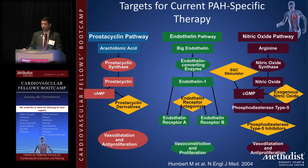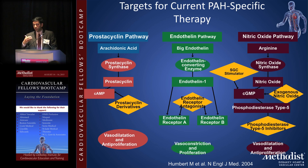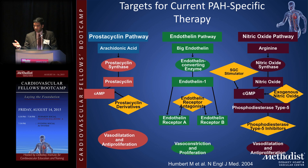There are three approved treatment pathways. The first is the prostacyclin pathway, which has the most evidence for survival benefit. We started with IV therapies — IV epoprostenol, IV treprostinil, IV iloprost — then progressed to inhaled therapies, and now have an approved oral prostacyclin as well.